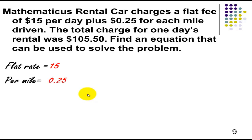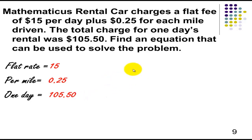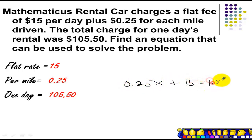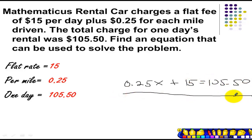So you will have $0.25 per mile. One day, the total charge will be $105.50. We can find the equation: 0.25x plus the flat rate of $15 equals $105.50. This will be our equation.